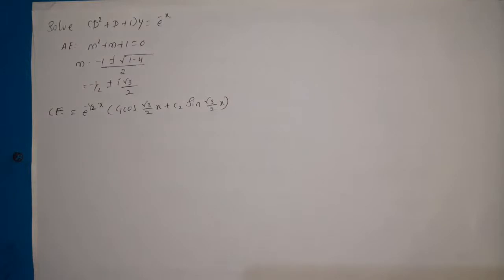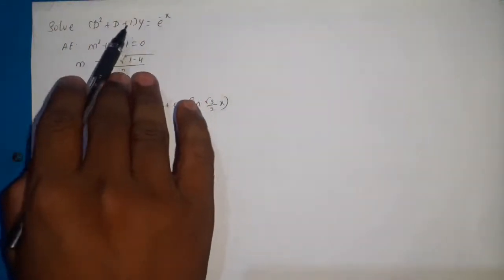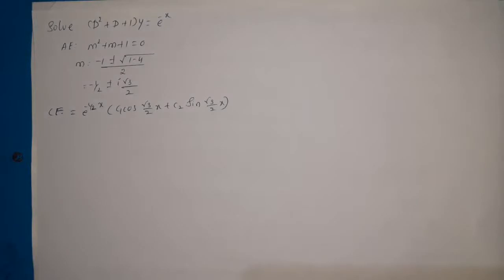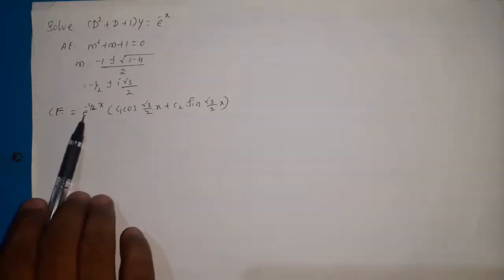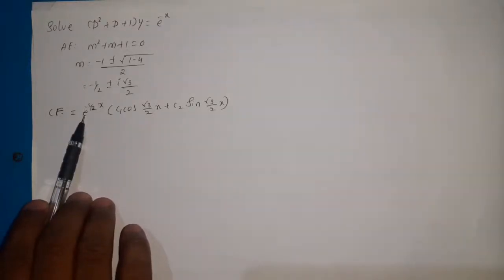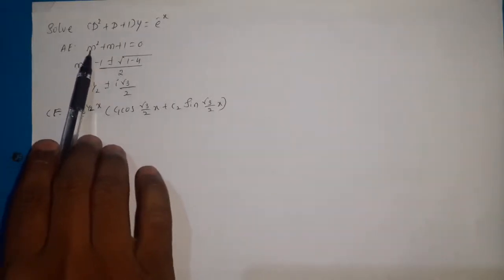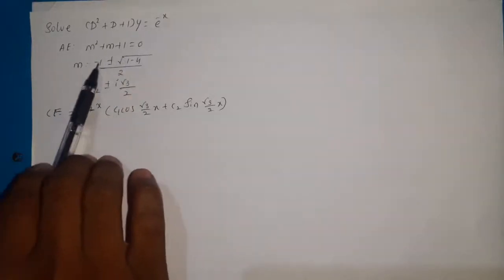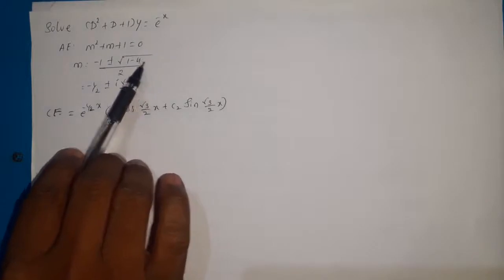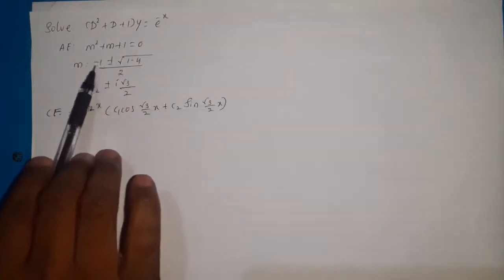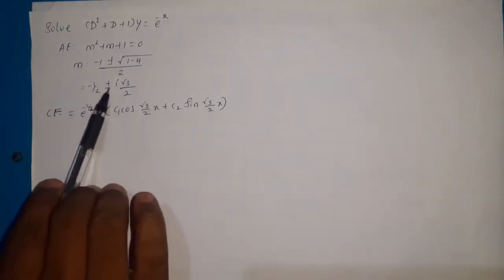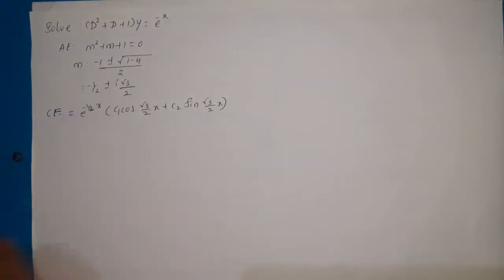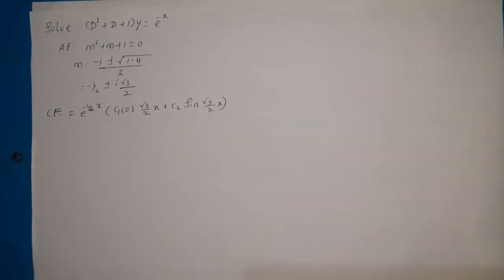Let us discuss examples on particular integrals. The given equation is (D² + D + 1)y = e^(-x). The auxiliary equation is m² + m + 1 = 0, and using the quadratic formula m = (-1 ± √(b²-4ac)) / 2a, the roots are m = -1/2 ± i√3/2. This is a pair of complex roots with real part -1/2 and imaginary part √3/2.